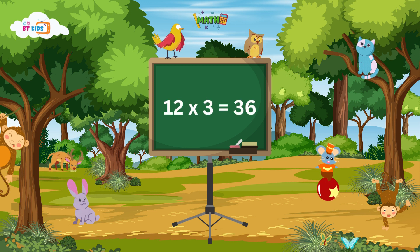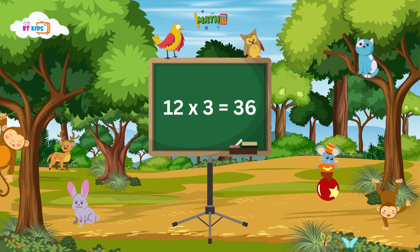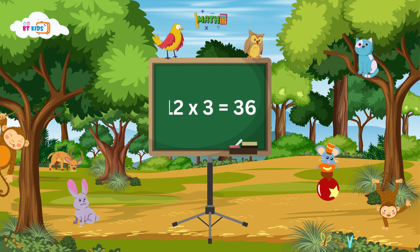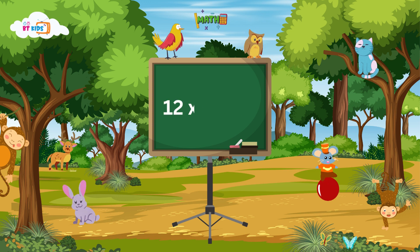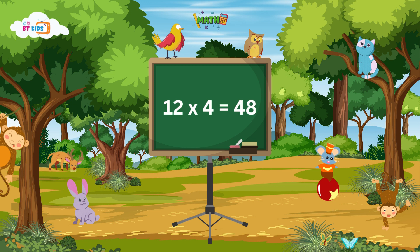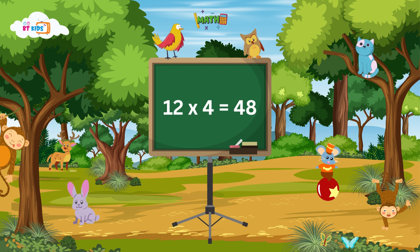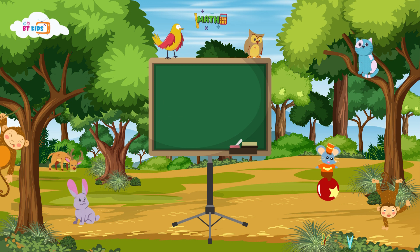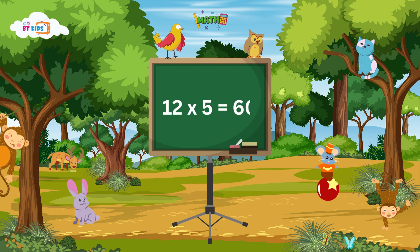Twelve threes are thirty-six. Twelve fours are forty-eight. Twelve fives are sixty.